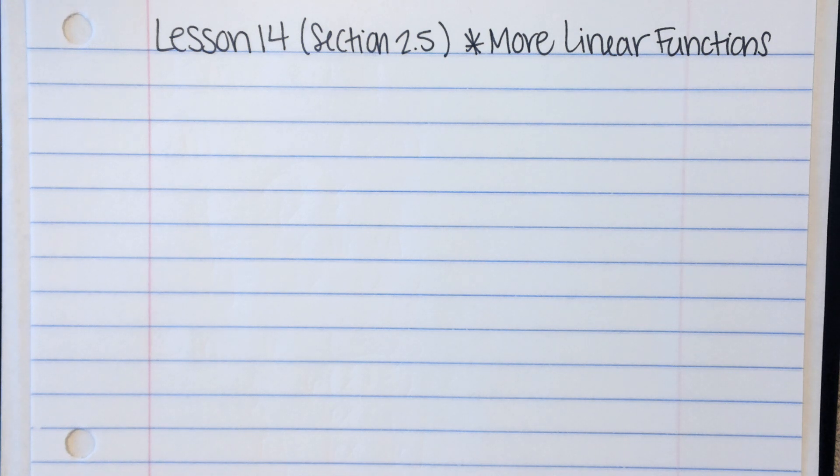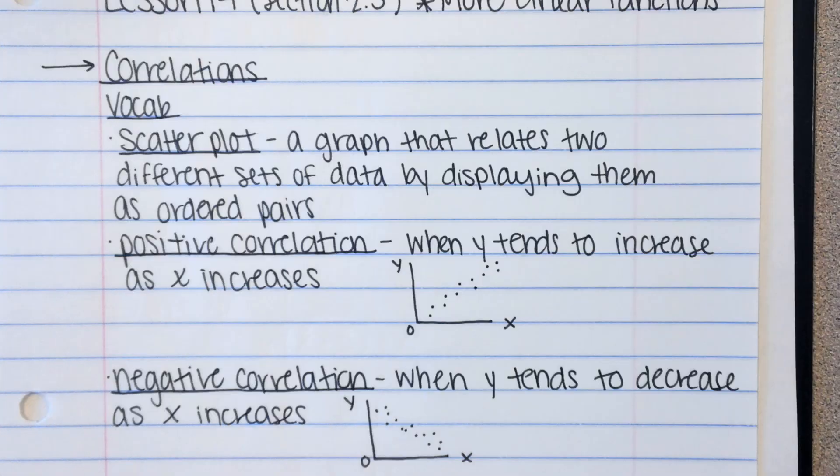The first thing that we're going to look at is some vocabulary. So I'll write the vocabulary down, and then you pause and write it down. Okay, so first we're going to talk about correlations, and we have some vocabulary. Remember, pause, write the vocabulary down, and listen to my explanations.